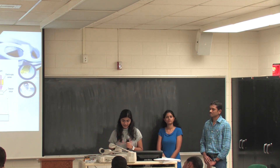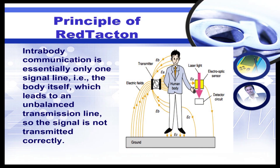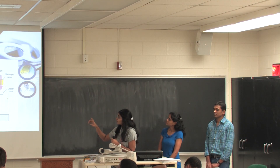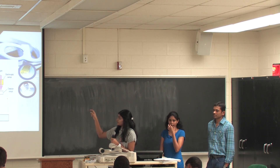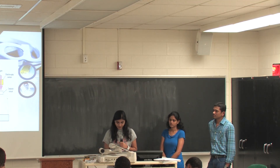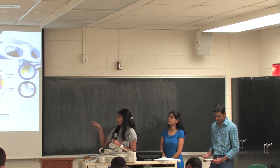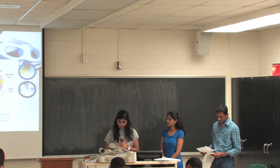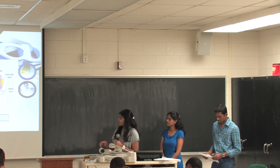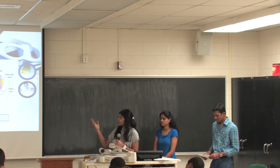The principle of RedTacton is basically based on two devices: a transmitter and a receiver. The transmitter sends the information to the body, which itself acts as a medium to transfer the data. At the receiver, it detects the data and transfers it to the circuit through a laser. RedTacton relies on the principle that the optical properties of an electro-optic crystal change according to weak electric fields. RedTacton detects the changes in the optical properties of the electro-optic device using a laser and then converts them to electric circuits.